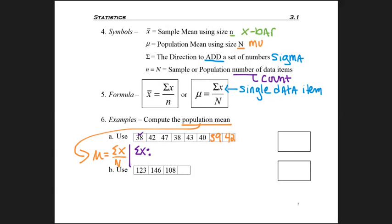So I would take 38 plus 42 plus 47, and keep doing that all the way through the list. And I would come up with a total of 329. So the next thing that I need to do is divide that.